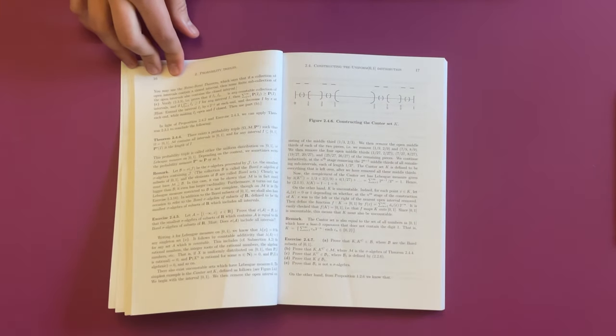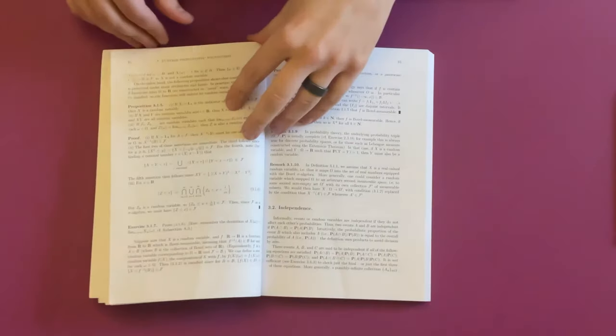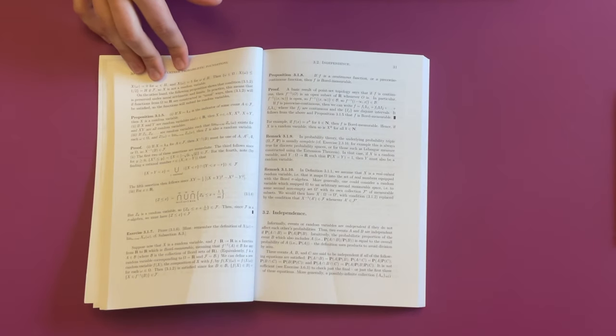After laying the foundations, the book then goes into some content that I am a lot more familiar with - ideas of random variables, for example. I wouldn't say that I was too surprised by the content, but I was able to think about it in the context of the broader ideas of measure theory and probability triples.